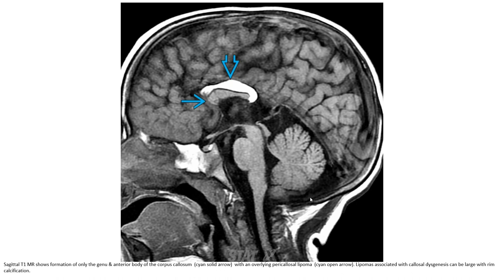This is a sagittal T1 sequence showing formation of only the genu and anterior body of the corpus callosum. Cyan solid arrowhead indicates an overlaying pericalosal lipoma. Cyan open arrowhead also shown. Lipomas associated with callosal dysgenesis can be large with peripheral calcification.